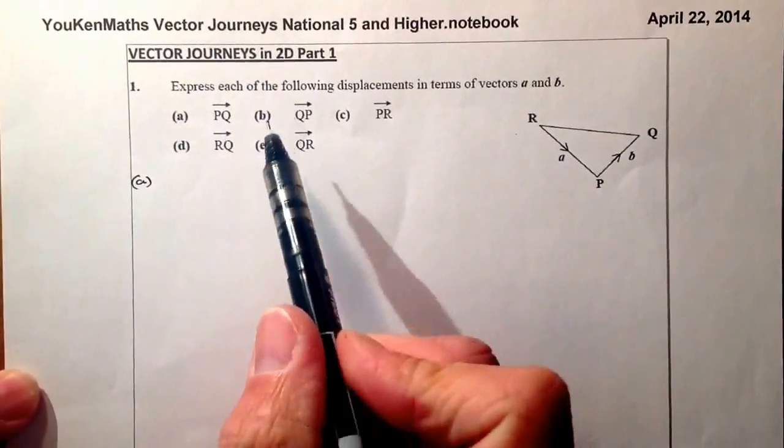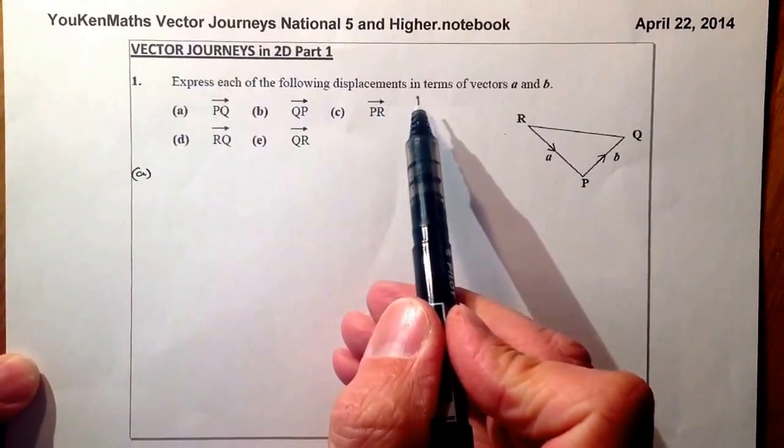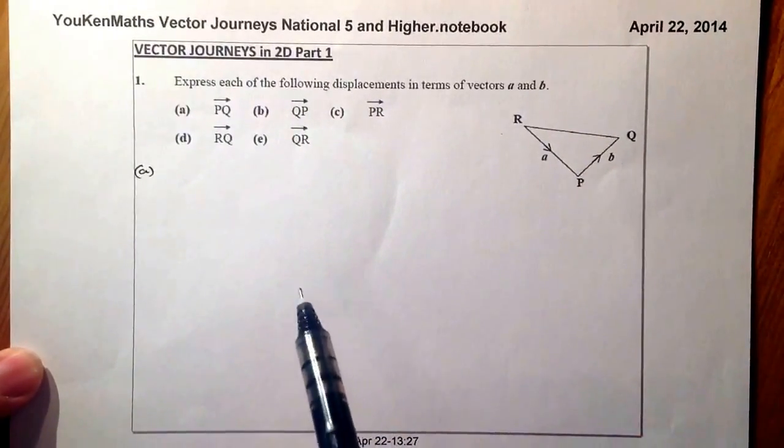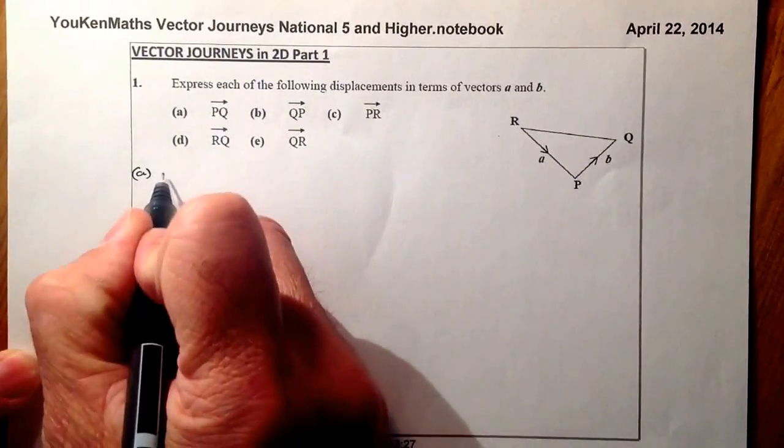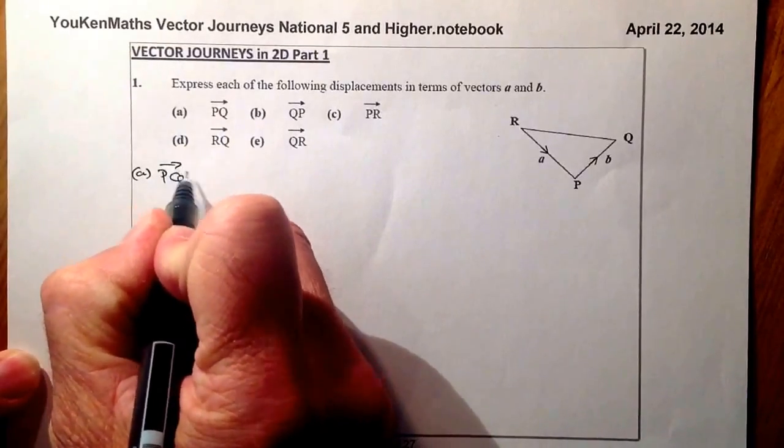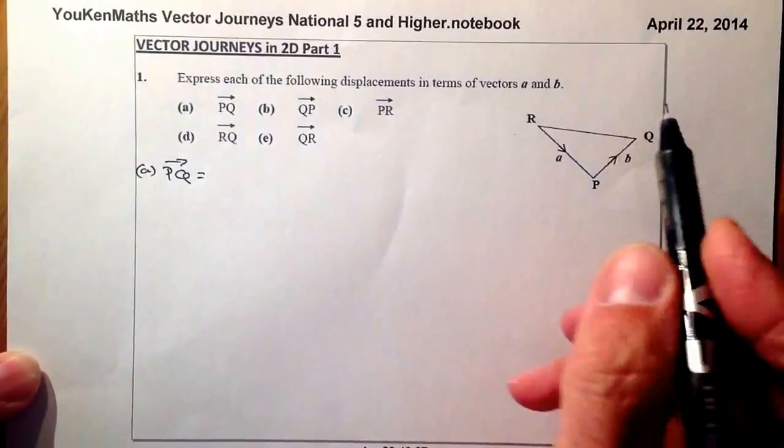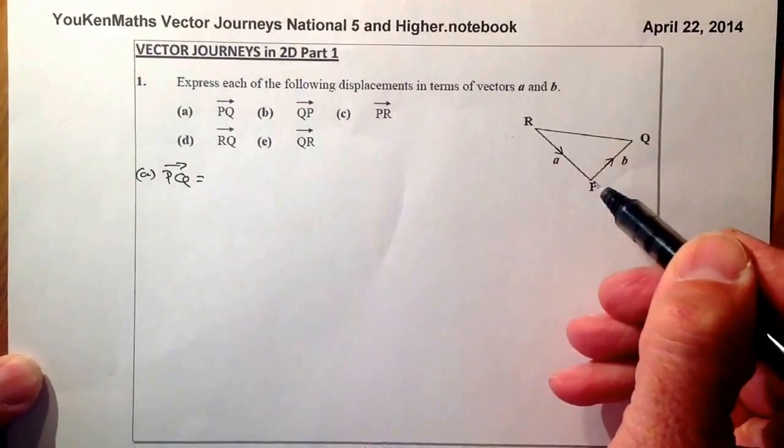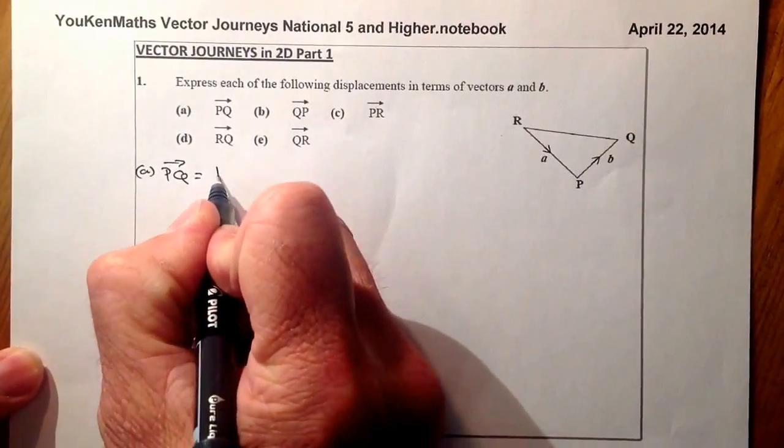For part A we have to express each of the following displacements in terms of vectors A and B. The first one that we're after is the vector P to Q. So P to Q is just simply from here to here and that there is the vector B.